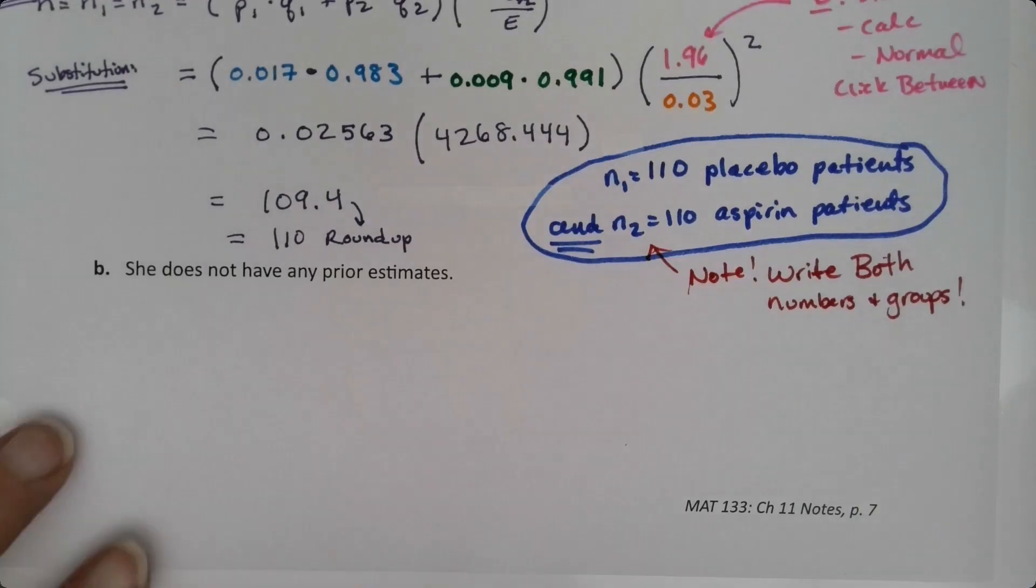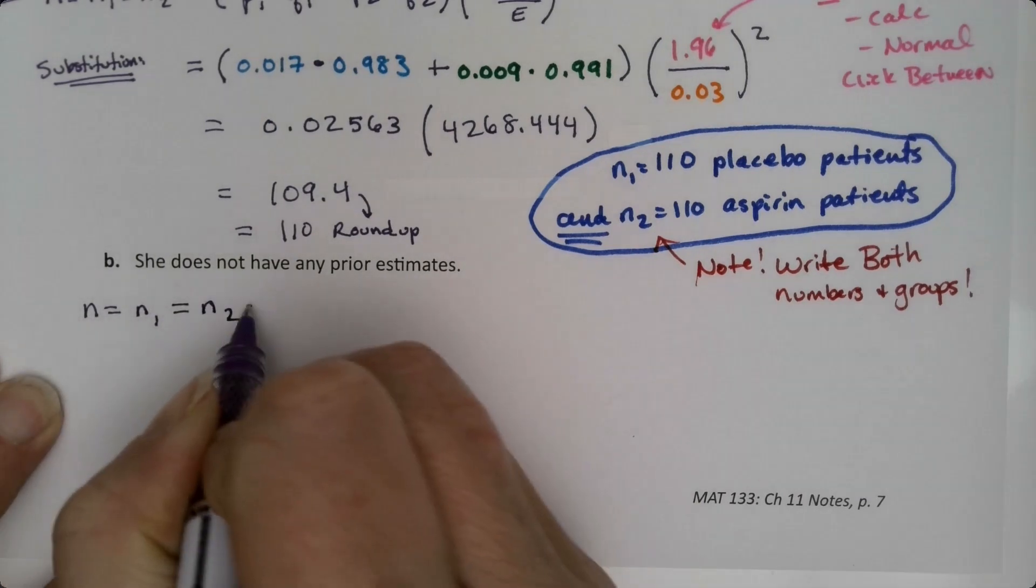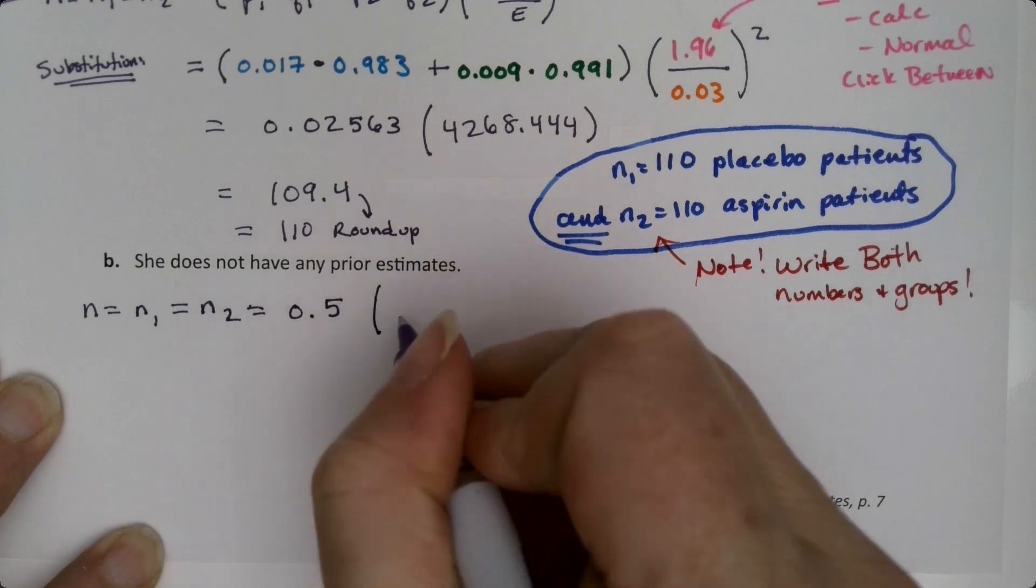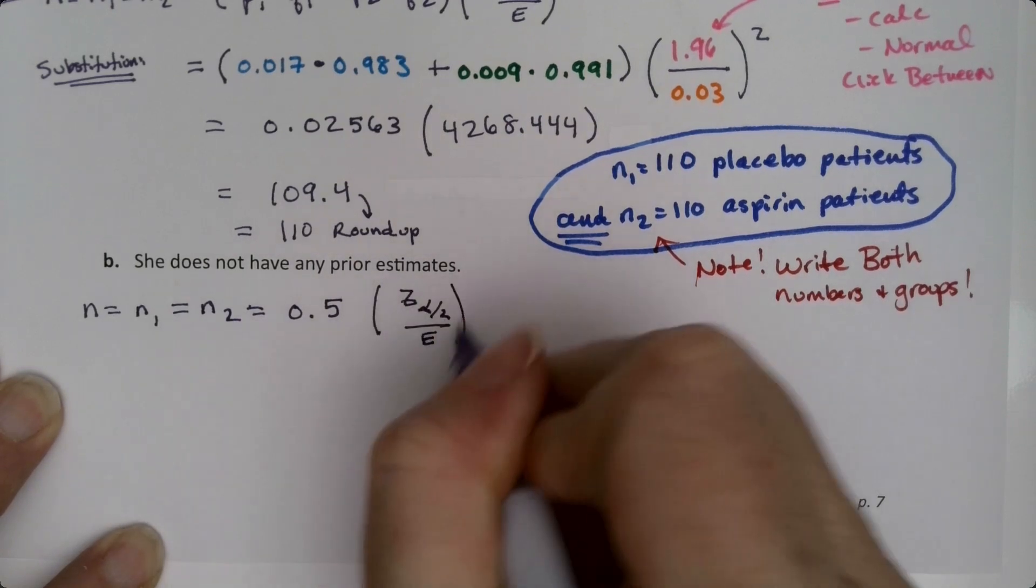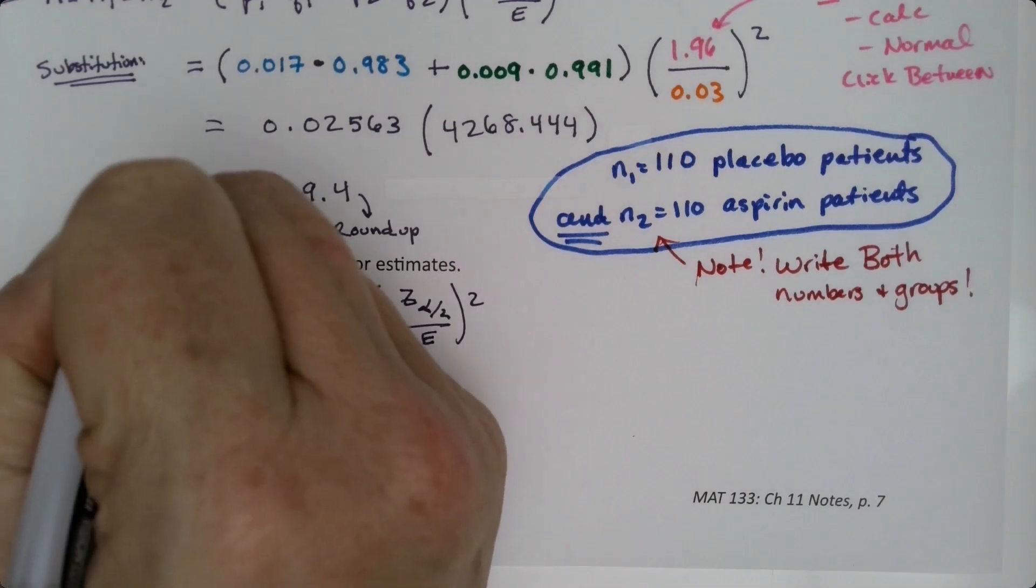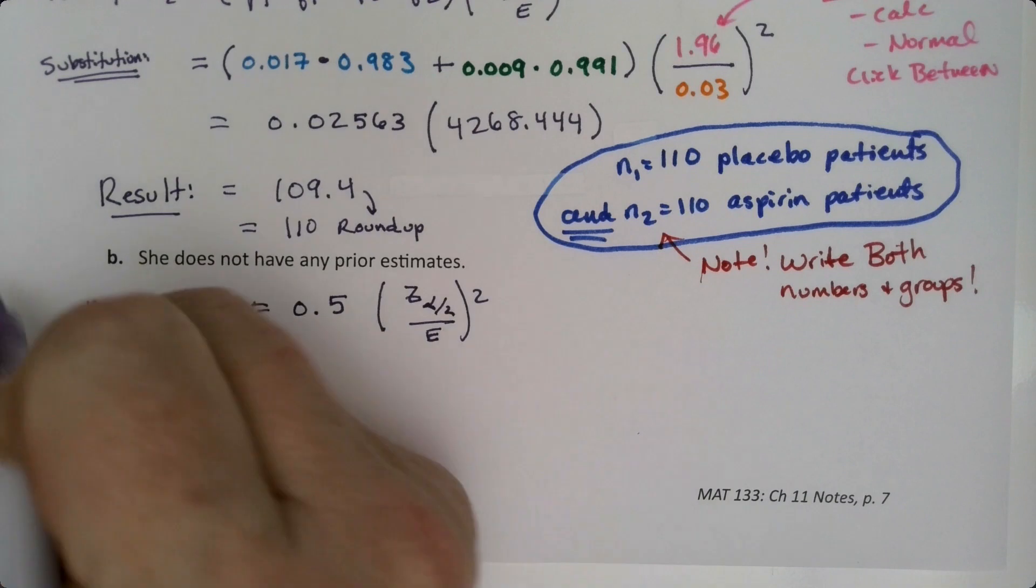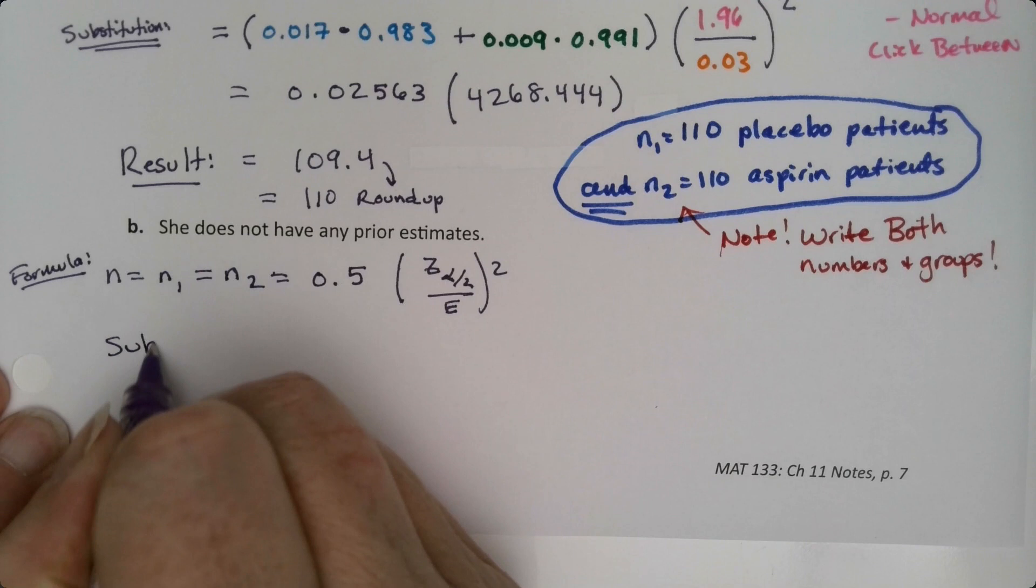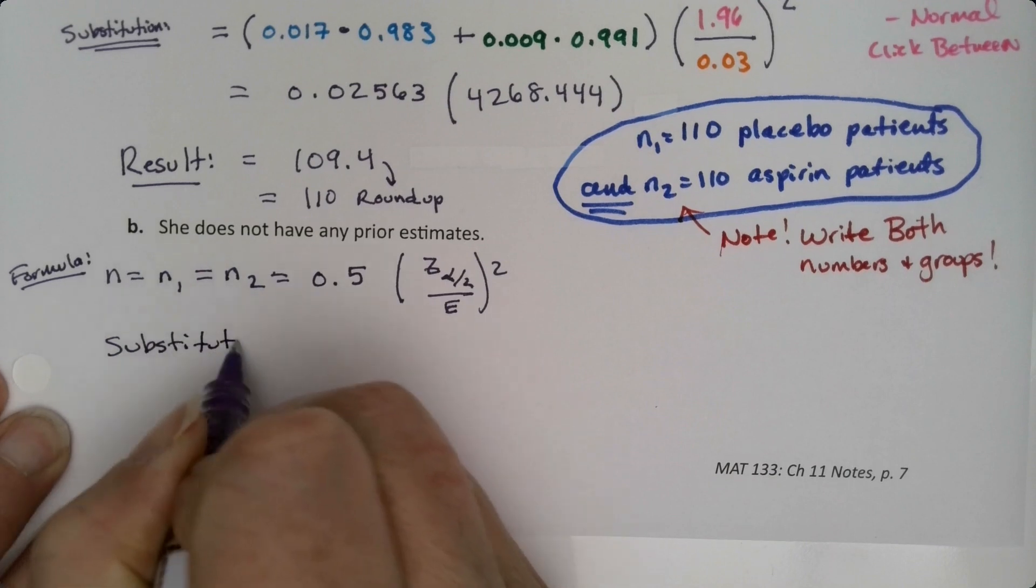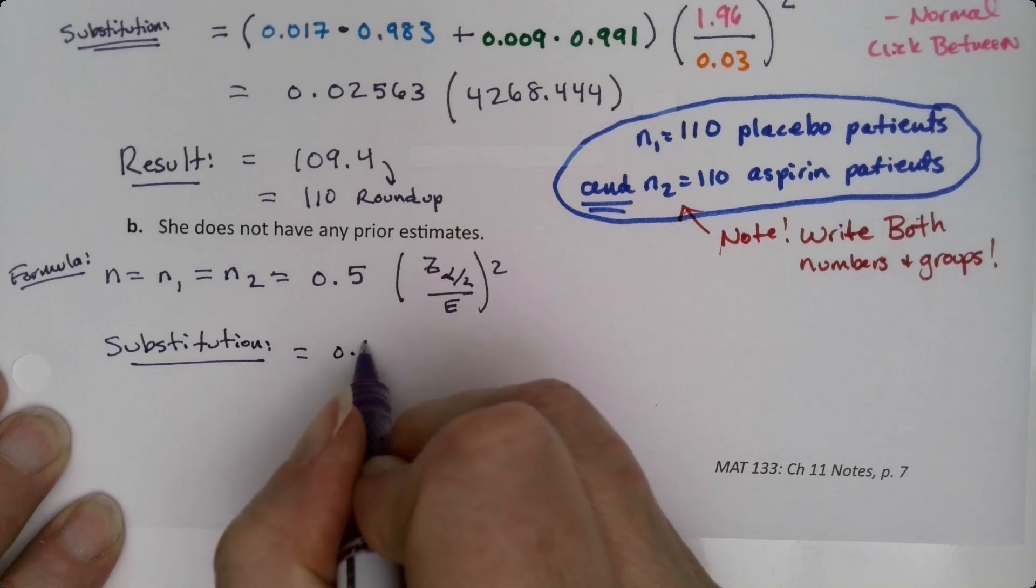Alright. Now, suppose we didn't have a prior estimate. Well, that's an easier formula. That's N equals N1 equals N2 is the 0.5 times the Z alpha over 2 over the error squared. Oh, sorry. I should have written result here. That's kind of my standard formula substitution result. So this is my formula right here. It's been a while since we've done this. Substitution is right here. Well, the substitution is easy. It's 0.5 times.